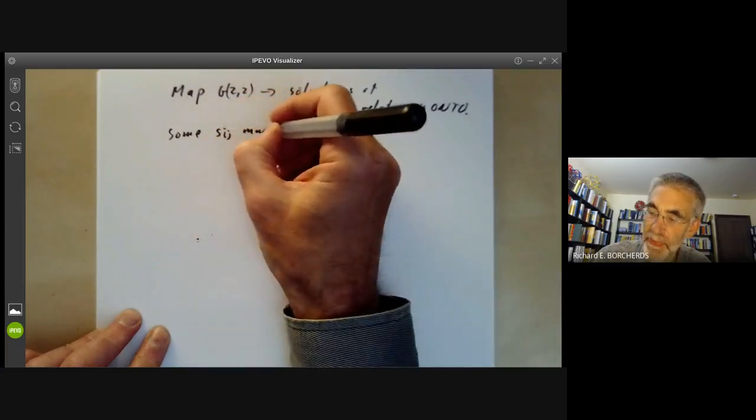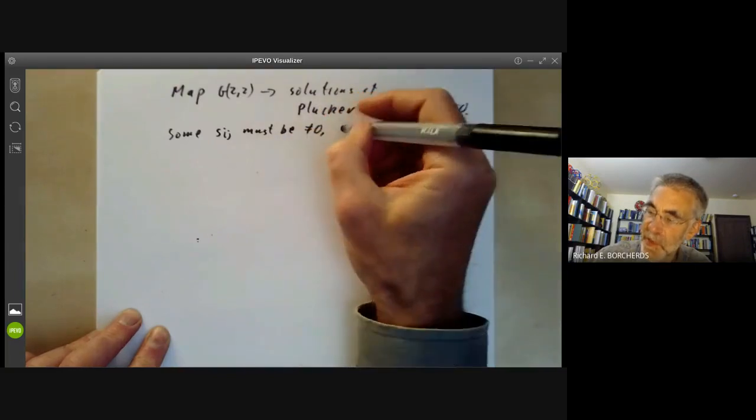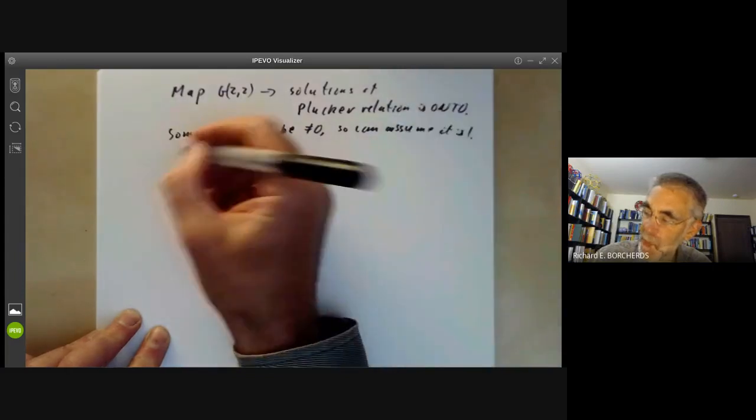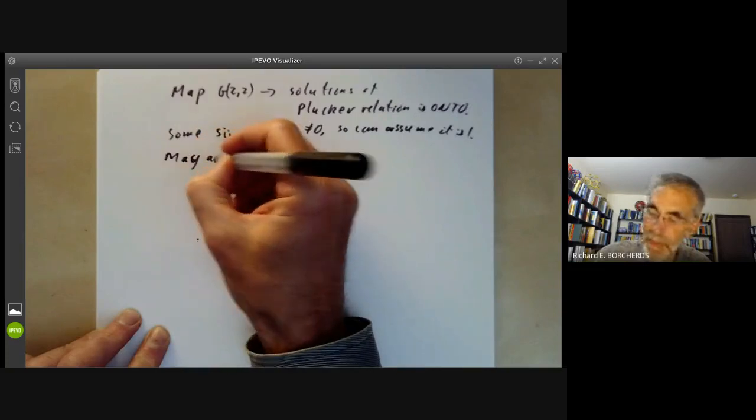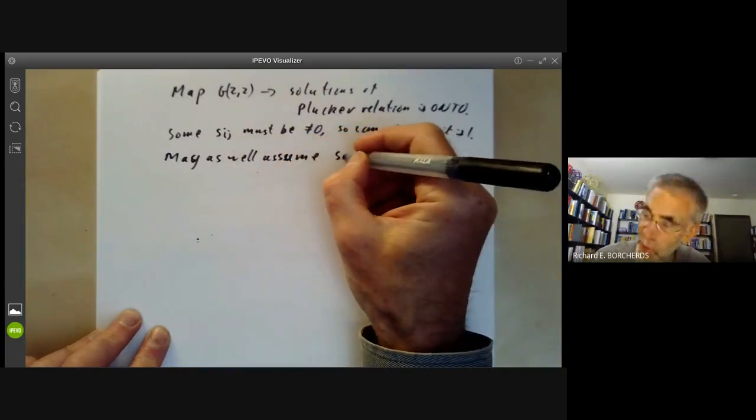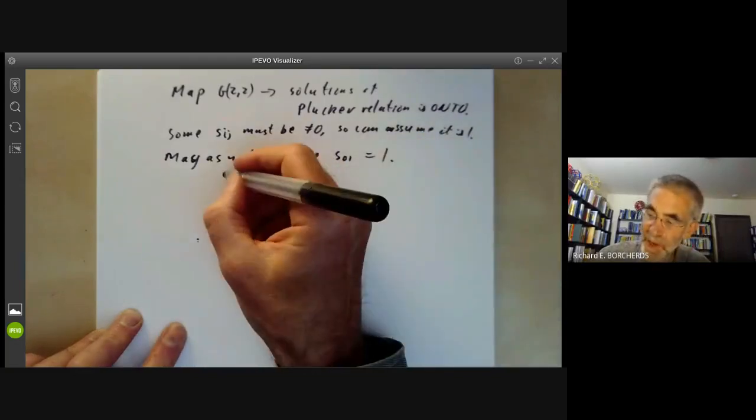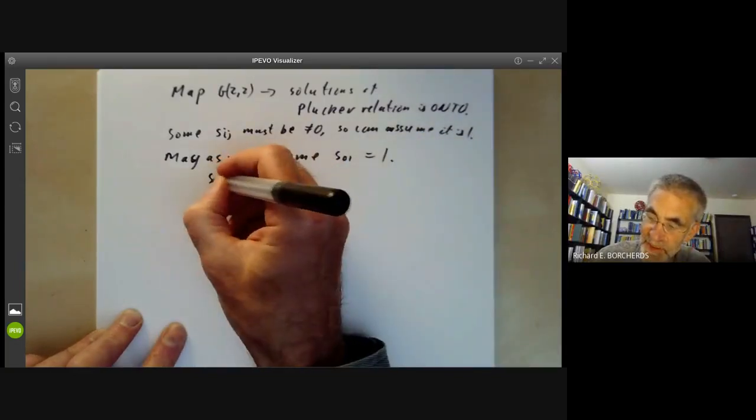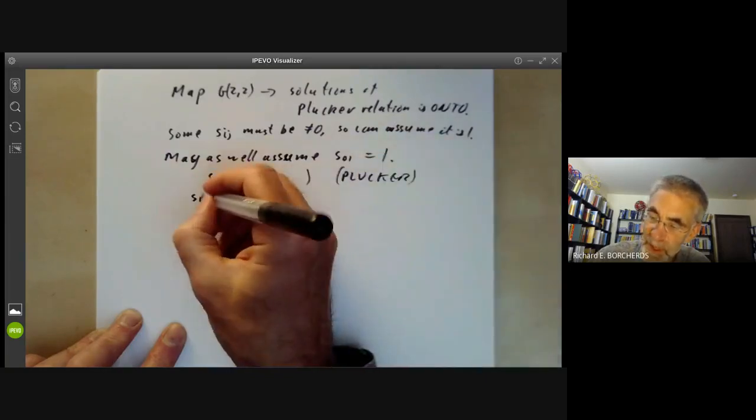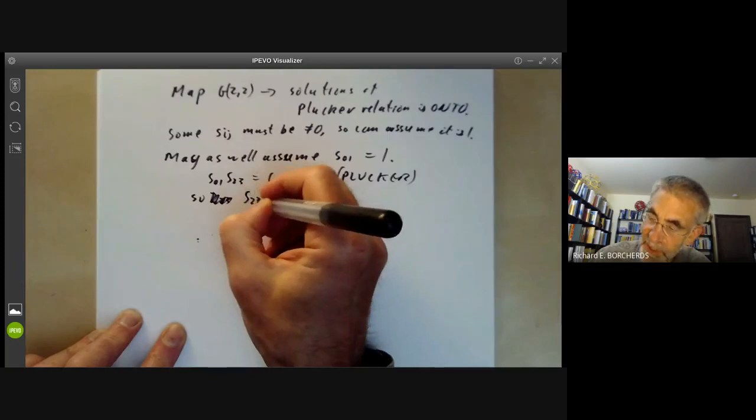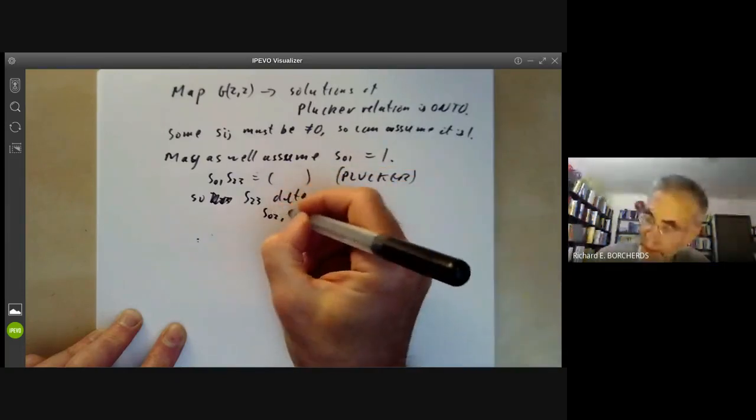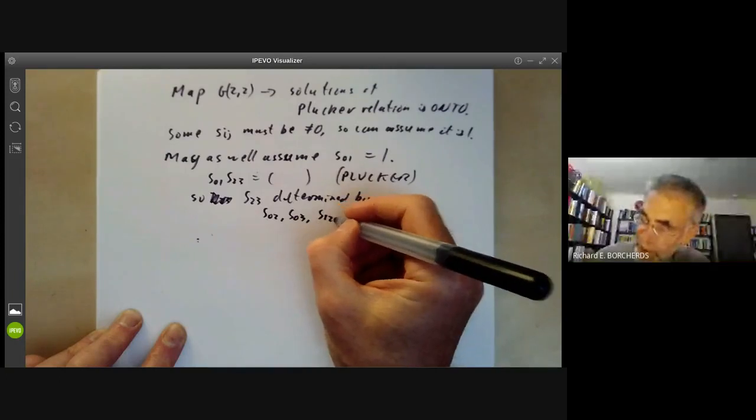So we want to show the map G22 mapping to the solutions of the Plucker relation is onto. Well some Sij must be non-zero so we can assume it is 1. So we may as well assume that S0,1 is equal to 1. But then we know that S2,3 times S0,1 is equal to some combination of the others by the Plucker relation. So S2,3 is determined by S0,2, S0,3, S1,2, S1,3.